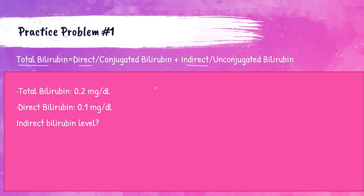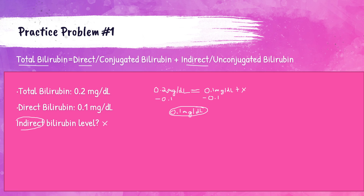So we set up the equation: 0.2 mg/dL equals the direct bilirubin of 0.1 mg/dL plus x, where x is the indirect or unconjugated bilirubin we're trying to solve. To solve for x, we subtract 0.1 from both sides: 0.2 minus 0.1 equals 0.1. So the indirect bilirubin level is 0.1 milligrams per deciliter.